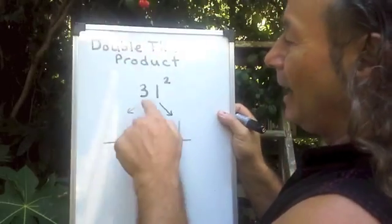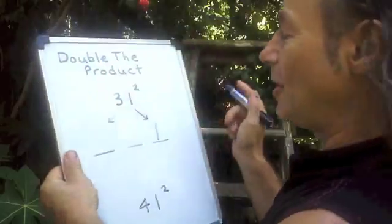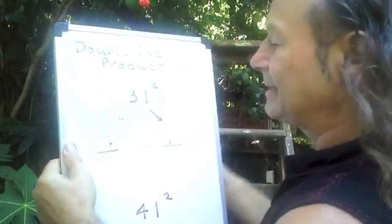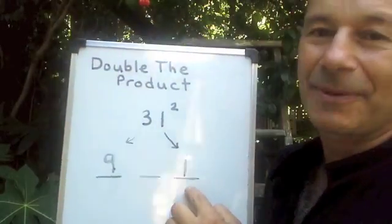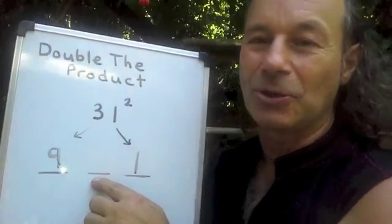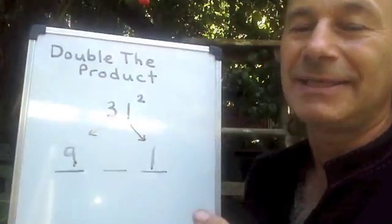And 3 squared on the left-hand side—3 squared is 9—so we put in the 9. The answer is going to be 900 and something. We don't know what the middle digit is, so what we have to do is called double the product. We say 3 times 1 is 3, double the 3 is 6.